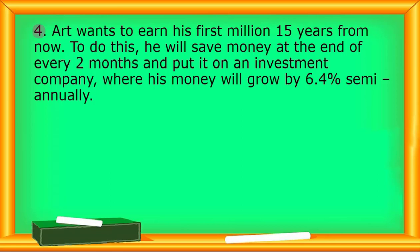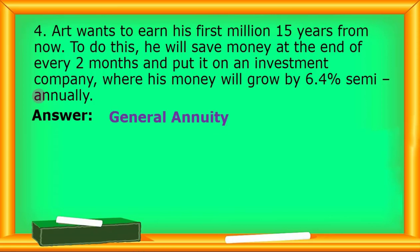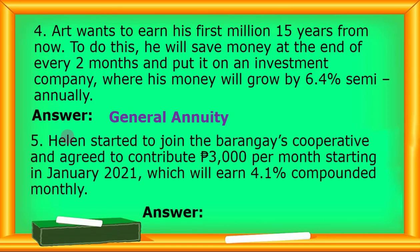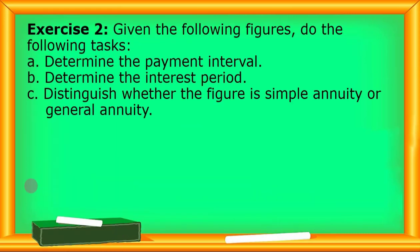For number four: Art wants to earn his first million 15 years from now. He will save money at the end of every two months and put it in an investment company where his money will grow by 6.4% semi-annually. The payment interval is every two months and the compounding period of the interest is semi-annually — they are not the same, so it's a general annuity. For number five: Helen agreed to contribute 3,000 pesos per month starting January 2021, which will earn 4.1% compounded monthly. The payment interval monthly is the same as the compounding interest rate period — so this is a simple annuity.